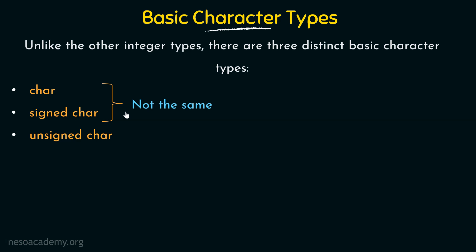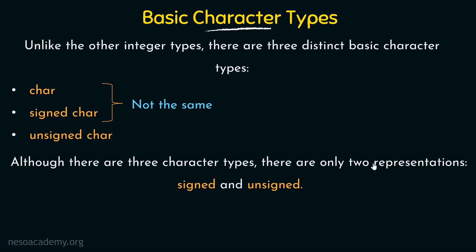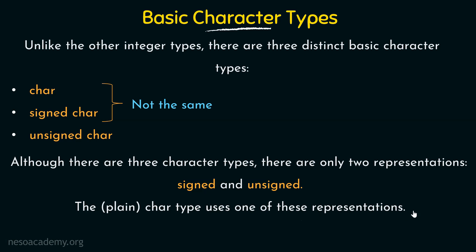Although there are three character types, there are only two representations: signed and unsigned. So the three types map to only two representations. Signed char is signed, unsigned char is unsigned, and plain char — its representation depends on the compiler. The plain char type uses one of these representations, and it will differ from compiler to compiler. In some compilers plain char means signed char, and in others it means unsigned char. That is the difference: three character types but only two representations.